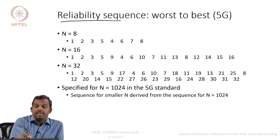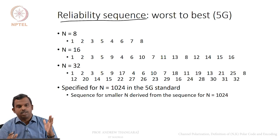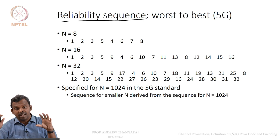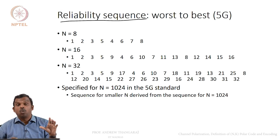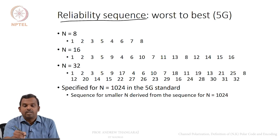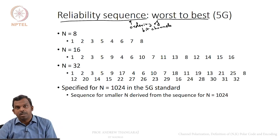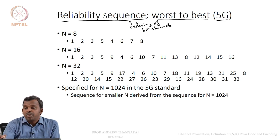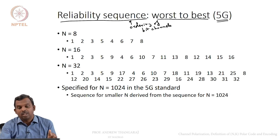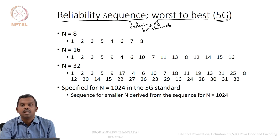The next important idea is the reliability sequence. After polarization, if you transmit the bits one after the other on the BPSK AWGN channel, some bit channels become very very good and some become very very bad. The reliability sequence tells you the ordering of bit channels from worst to best — which is the worst among the N bit channels and which is the best.